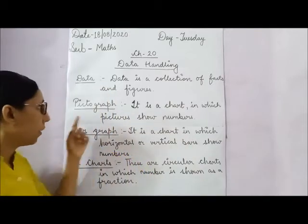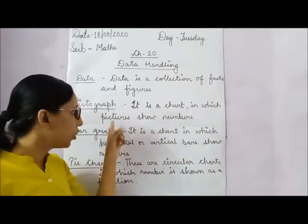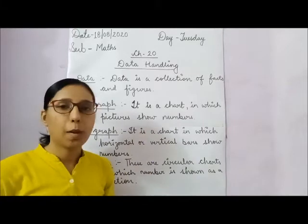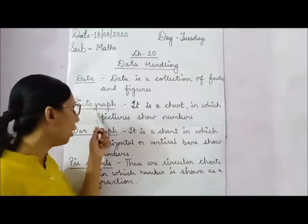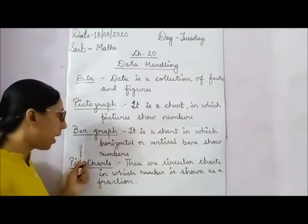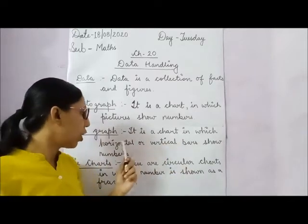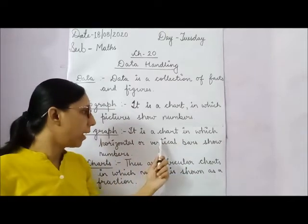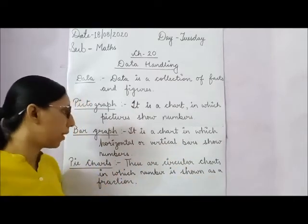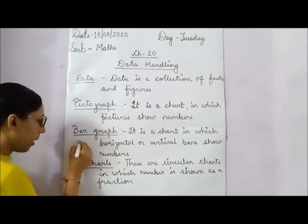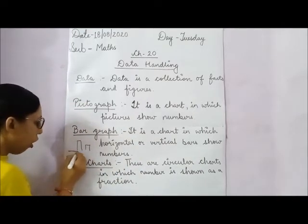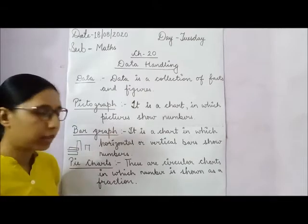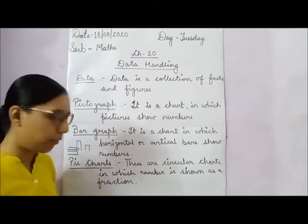What is a pictograph? It is a chart in which pictures show numbers — when we show data using pictures, that is called a pictograph. A bar graph is a chart in which horizontal and vertical bars show numbers. When we show numbers using horizontal bars, those are called a bar graph.